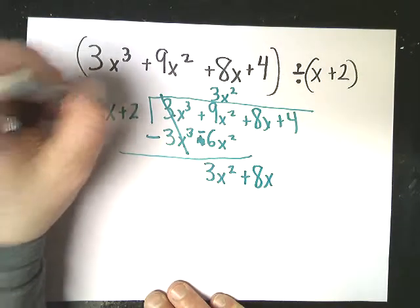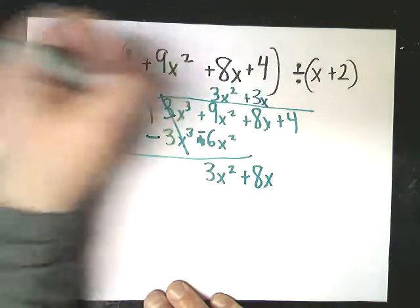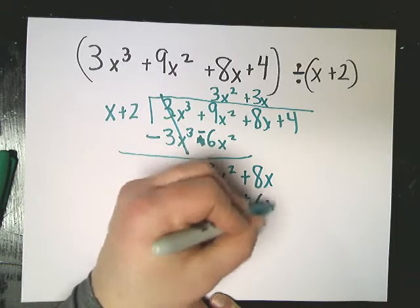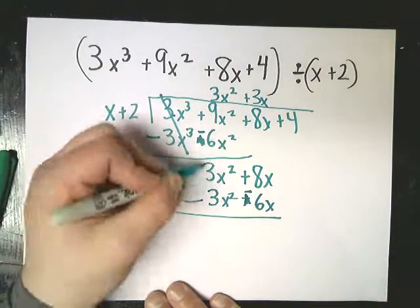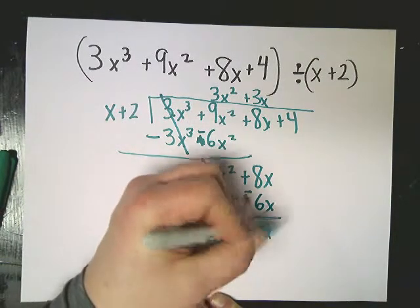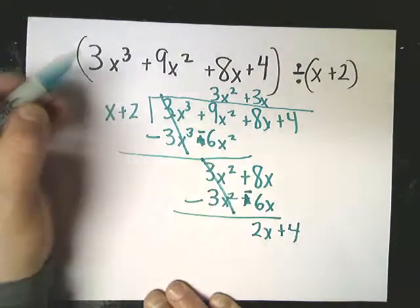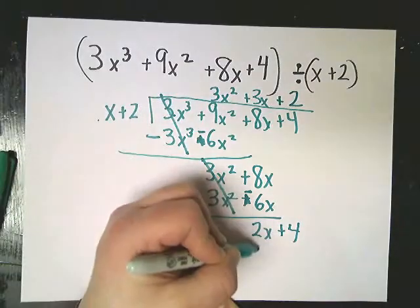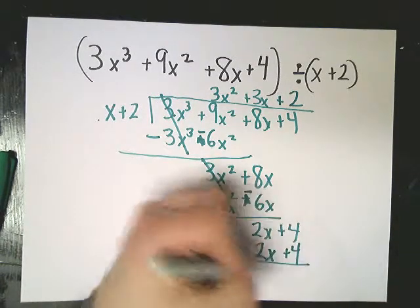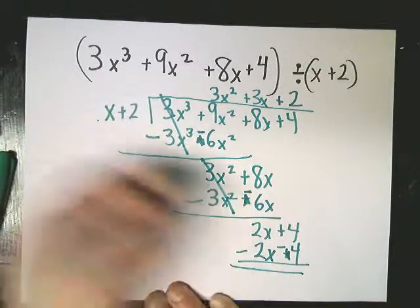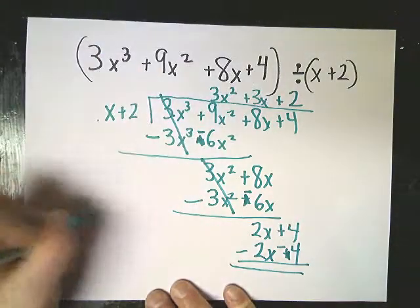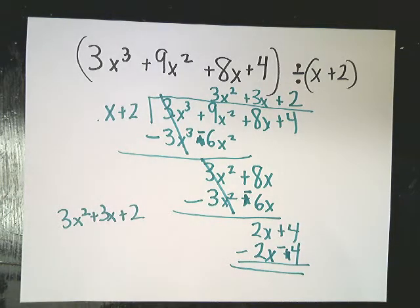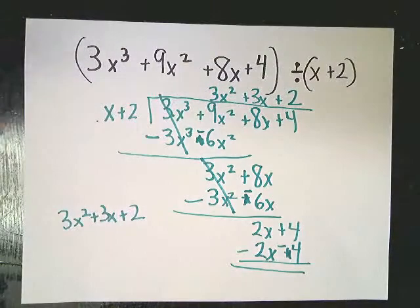I need to multiply this times 3x. Once again, I'm going to go ahead and change all the signs out. And then, what do I multiply the x by to get the 2x? Well, 2, of course. So I end up with the final answer of 3x squared plus 3x plus 2. That's when you have no remainders. It works out fine. You can go ahead and multiply this back in. It should give you this number.